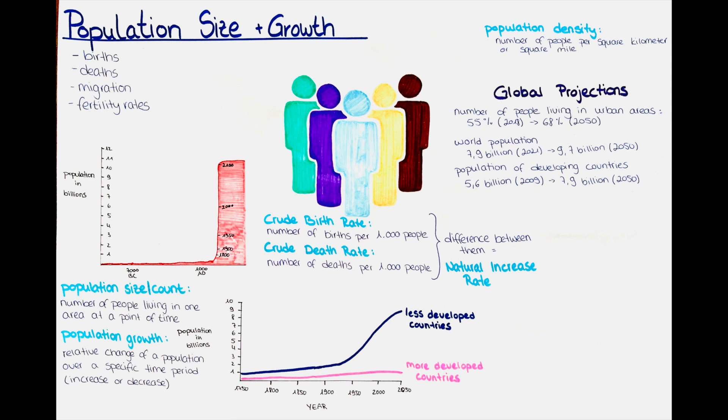Migration can contribute to the spread of infectious diseases across borders. People moving to other countries may come from regions with high disease burdens or may be exposed to new diseases during their journey. If adequate screening and healthcare services are not in place, there is a risk of outbreaks in host communities.